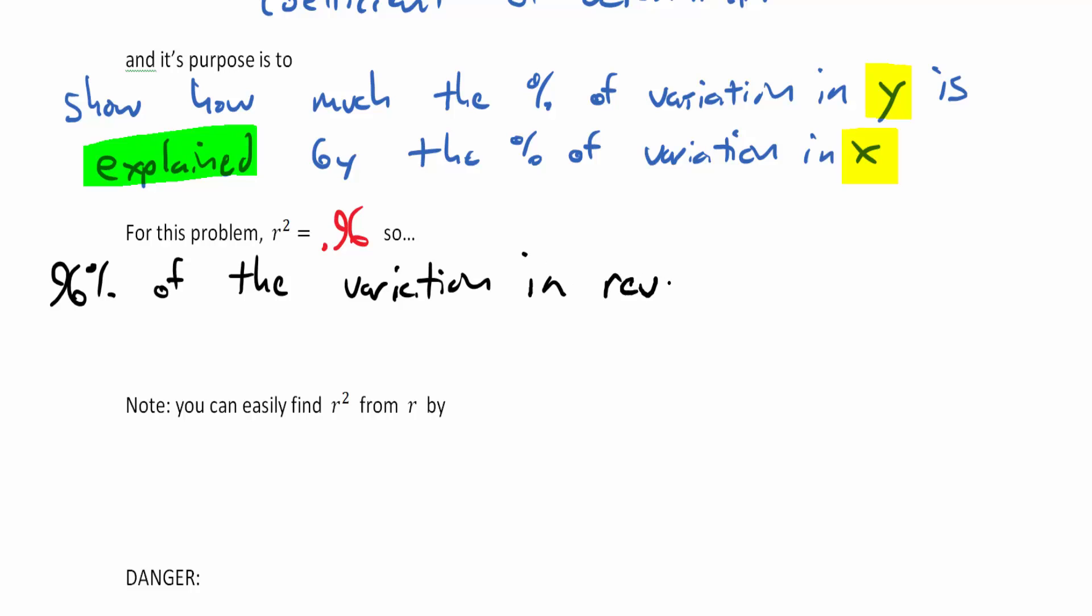Well, we have a 96% coefficient of determination. So we can say that 96% of the variation in revenue, you see how I've basically taken what I've written in blue here and adapted my units for the y, so 96% of the variation in revenue is explained by the variation in number of cars bought.